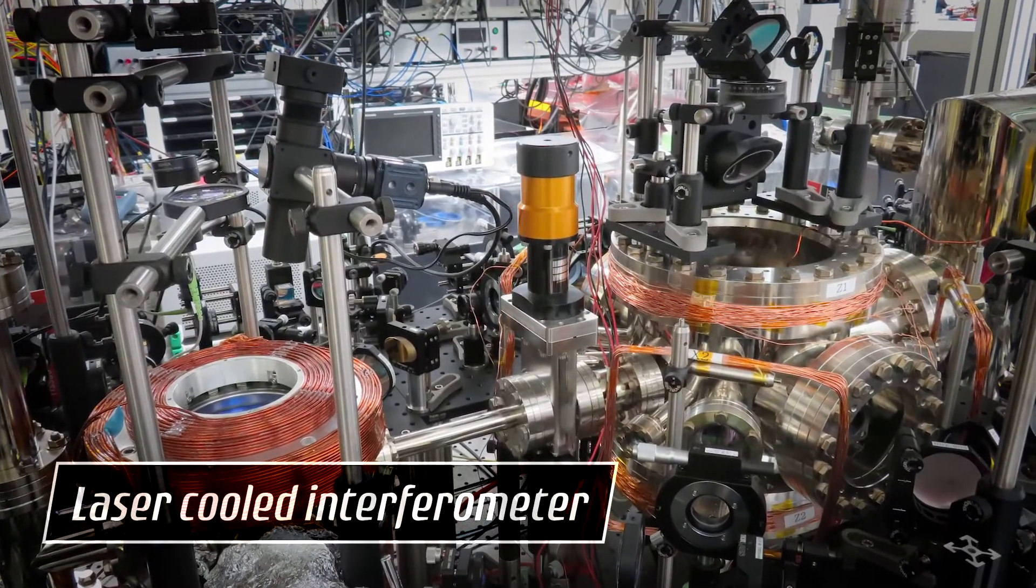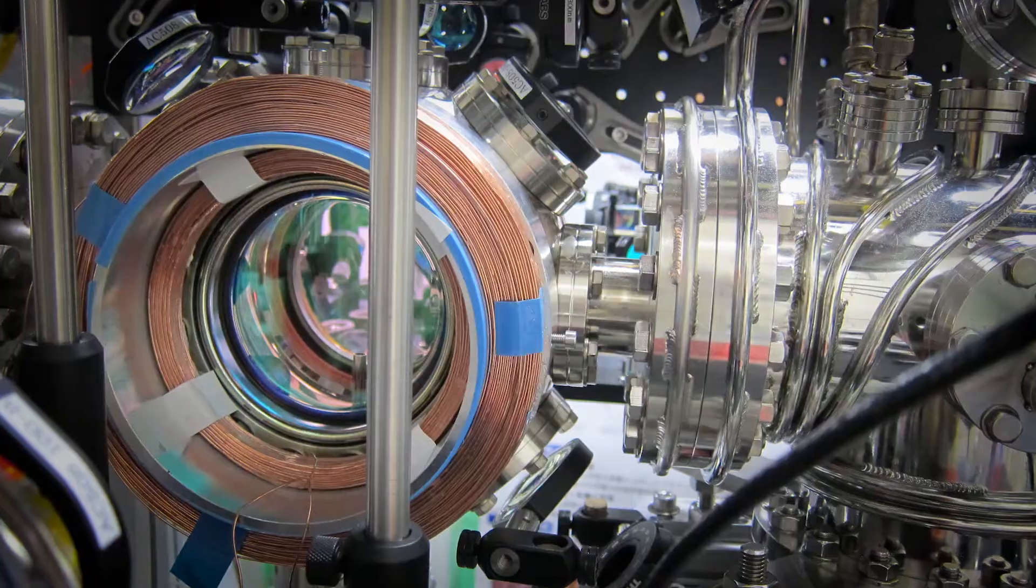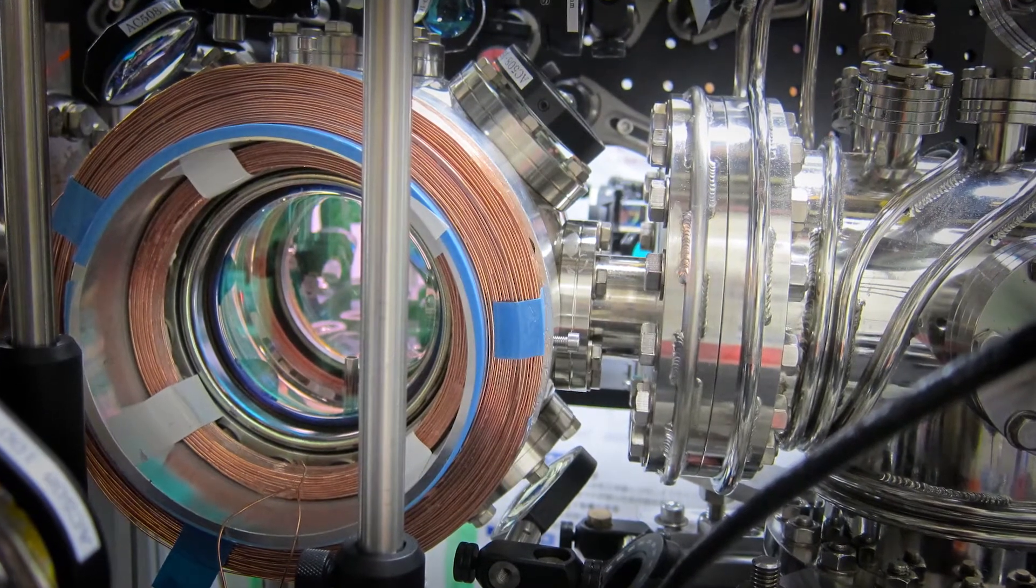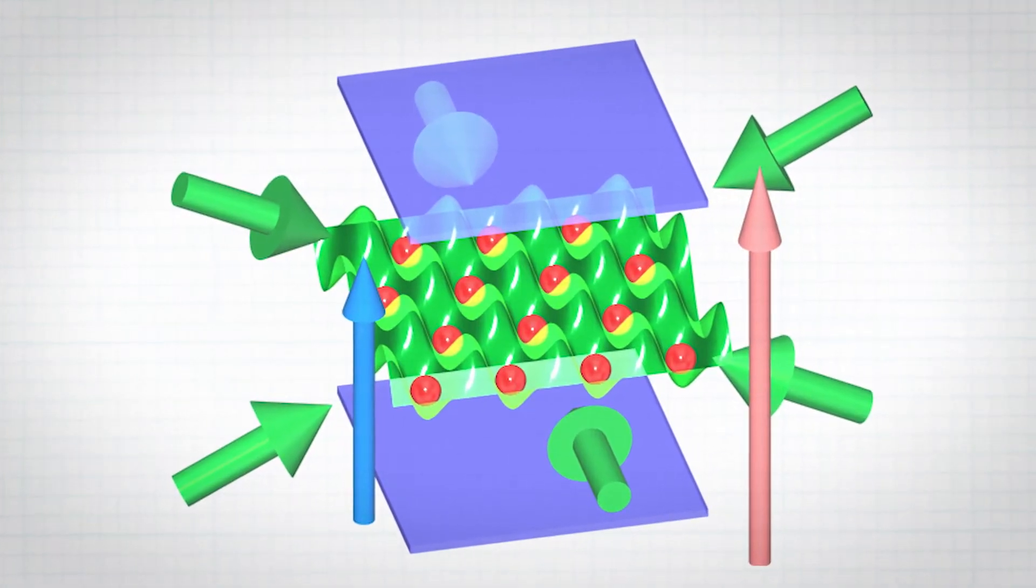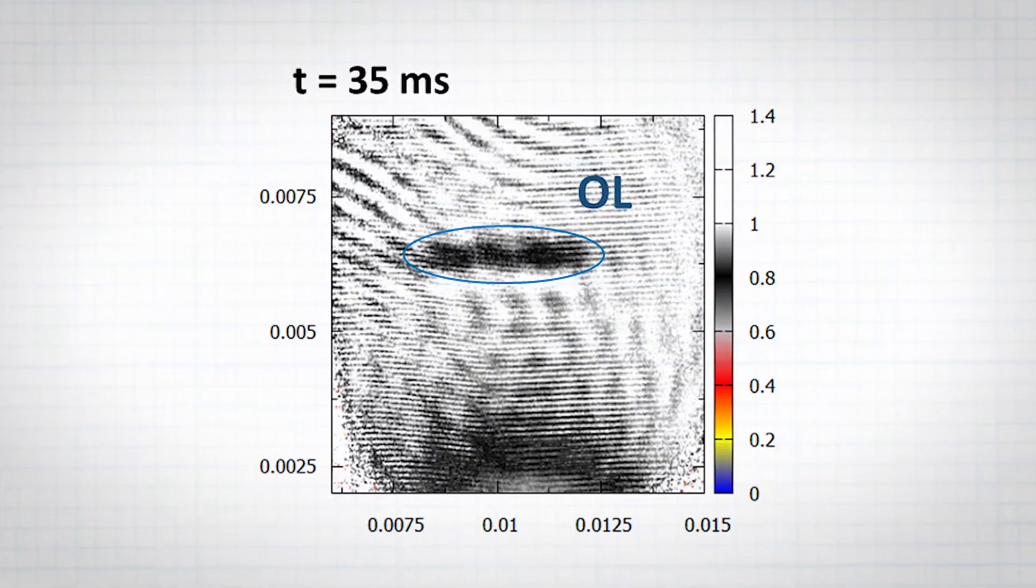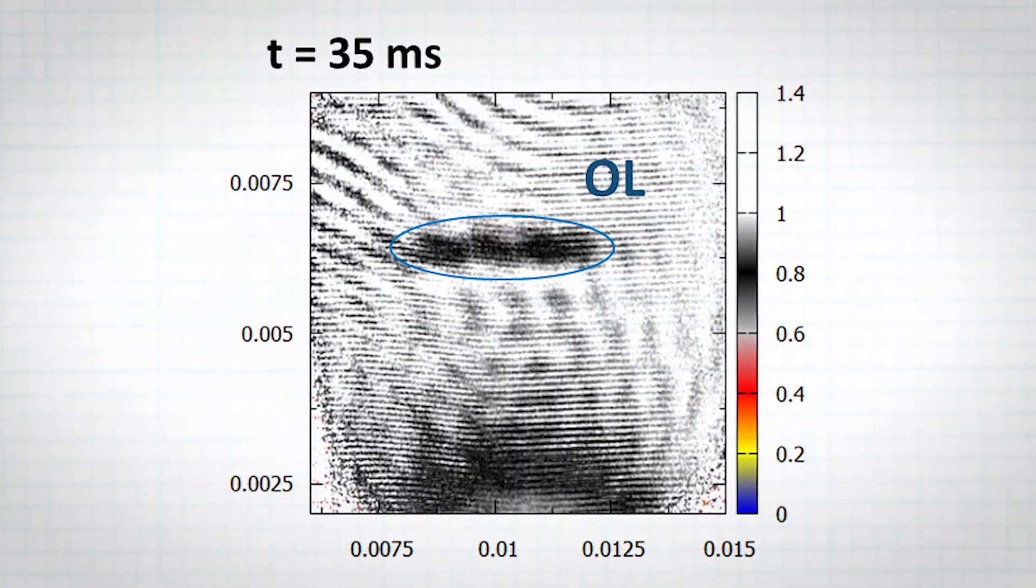So we want to realize a very stable environment. We make a lattice potential using a laser. And we put the atom one by one into this potential. Then we can measure the EDM very accurately.